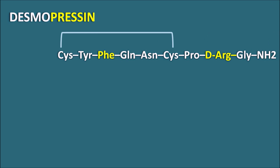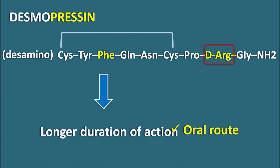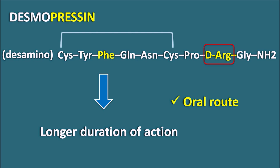Desmopressin has arginine at the eighth position, but this is D-arginine rather than L-arginine. Apart from this, the amine group is removed from the cysteine on the N-terminal, so we represent this as desamino — desamino argipressin is nothing but desmopressin. What is the advantage of desmopressin compared to vasopressin? Vasopressin has two limitations: first, it is not suitable by oral route and must be given by injection; second, it has a short duration of action due to metabolism. These two limitations are not observed with desmopressin, which has a long duration of action, can be given by oral route, and also has more selectivity for anti-diuretic action compared to vasopressin.